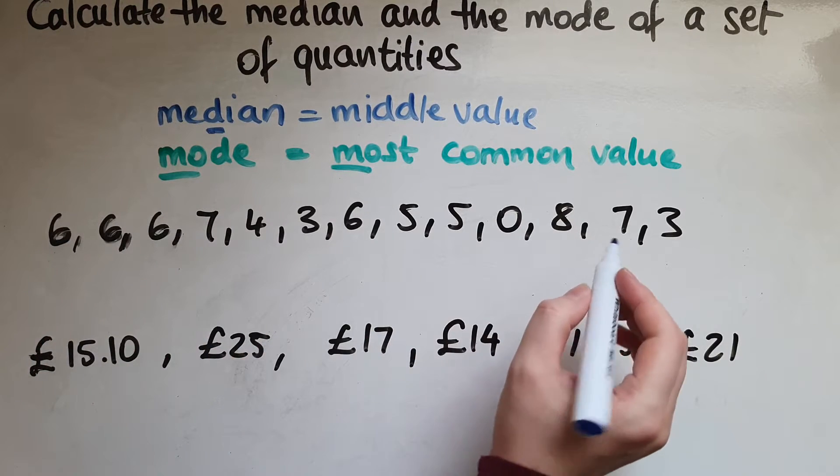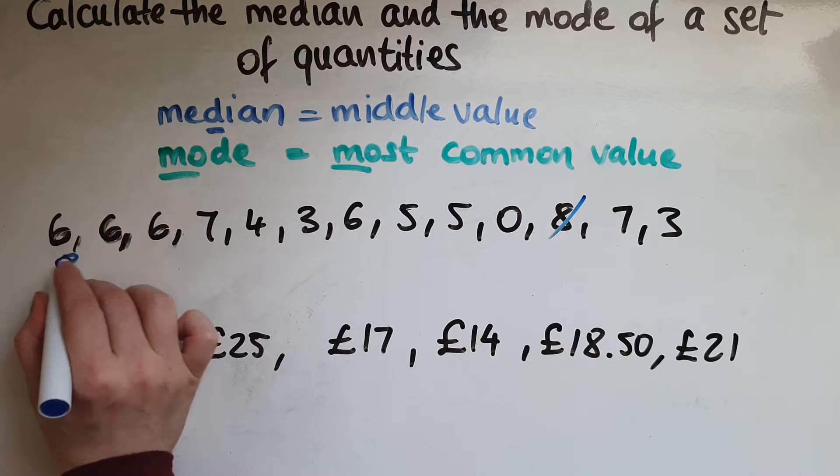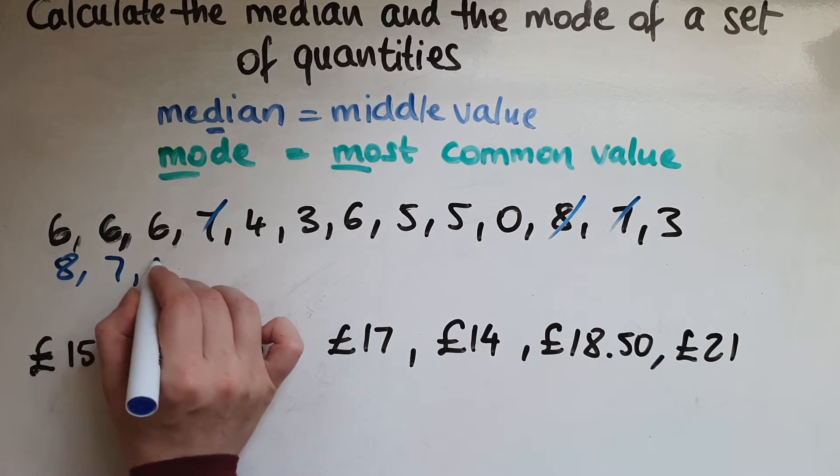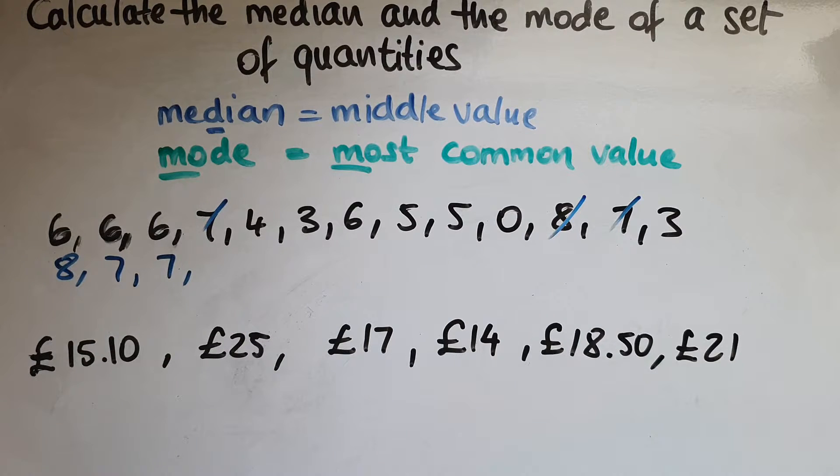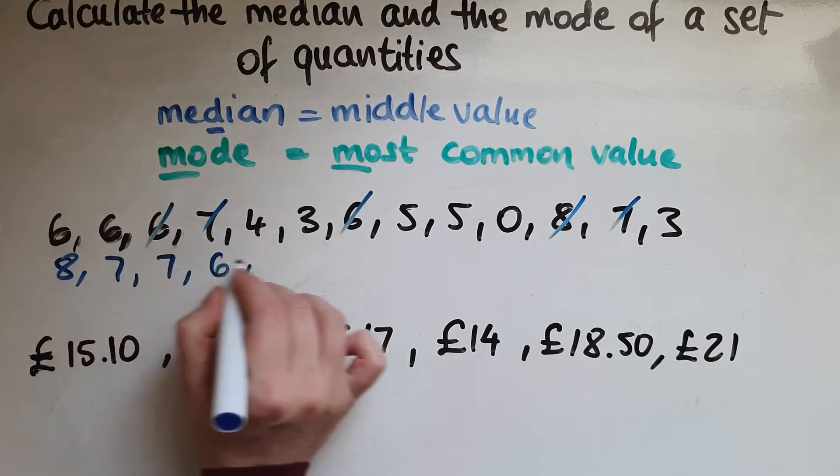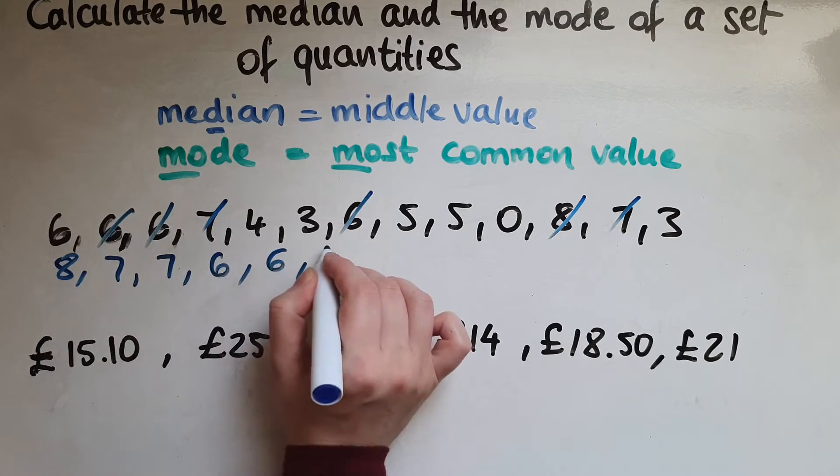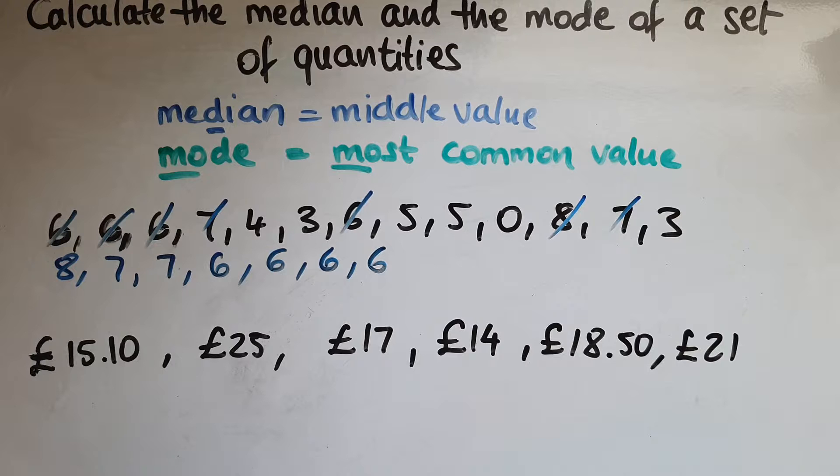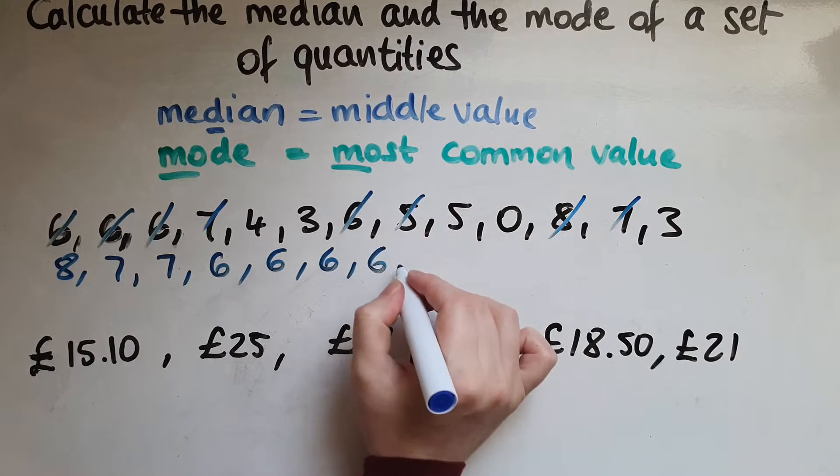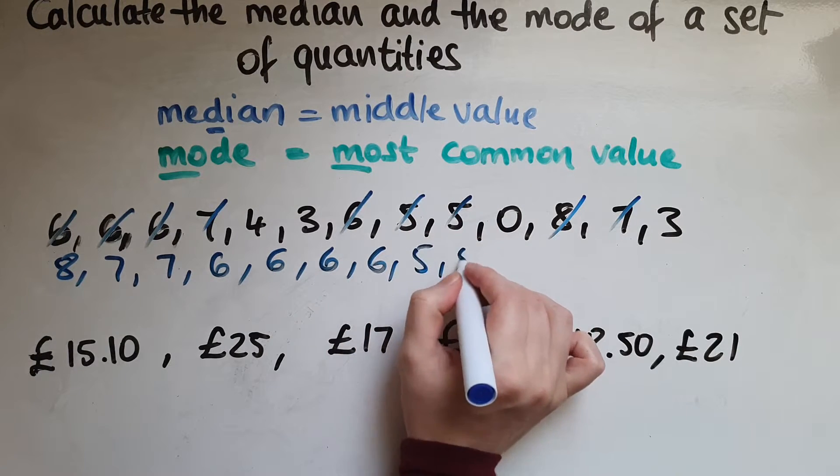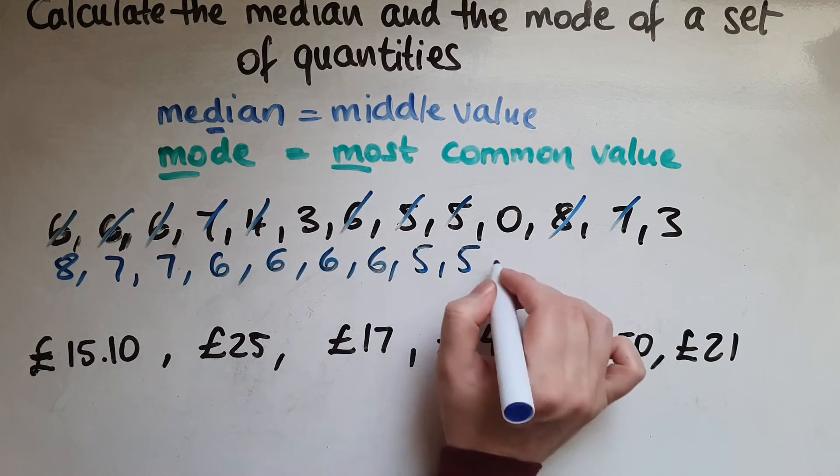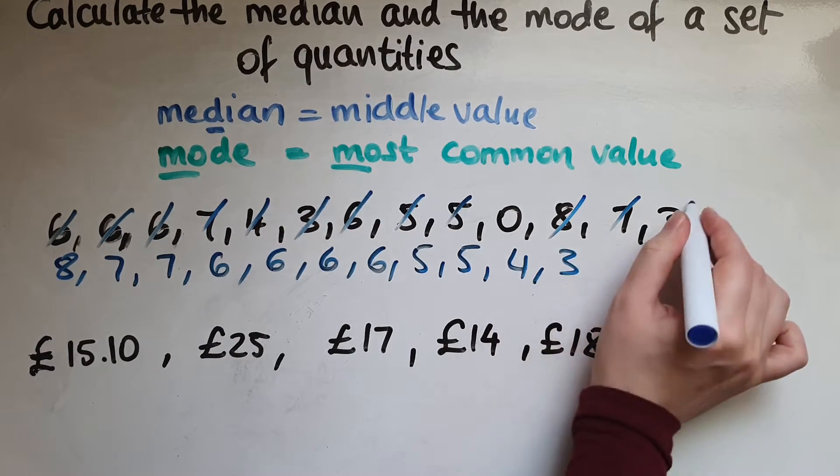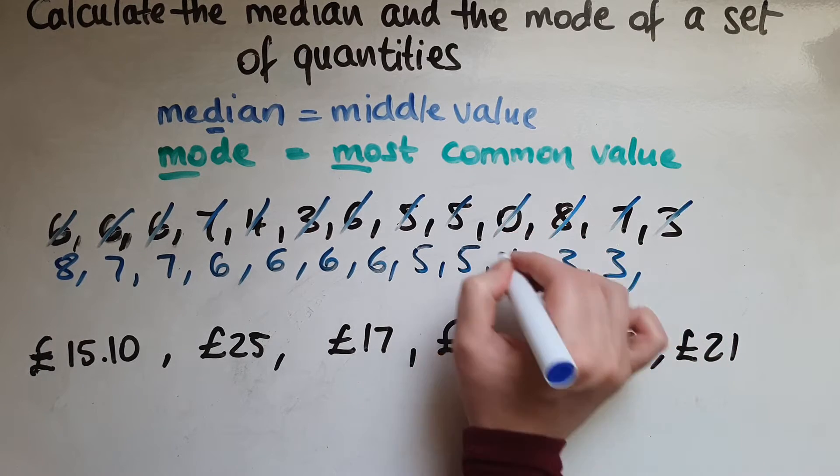So I can see the highest one is 8, and then I've got 7. There are two 7s, so I must make sure I write both of them. And we've got a 6 here, 6, 6 and 6. And we've got a 5 and a 5, then a 4, then a 3, and then a 0.